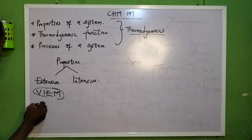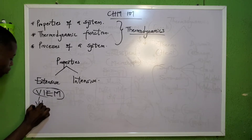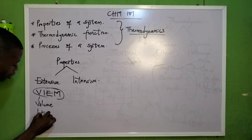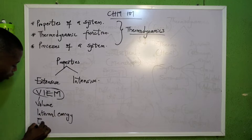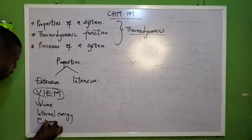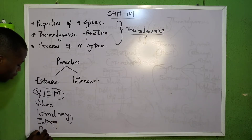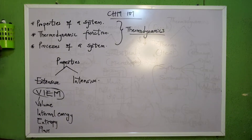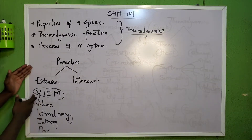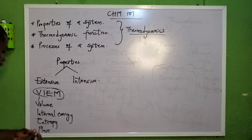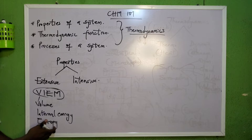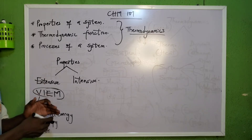Whenever you remember VIEM, know that these are the extensive properties. V stands for volume, I stands for internal energy, E stands for entropy, and M stands for mass. Volume is dependent on the magnitude of the material under consideration, and internal energy, entropy, and mass are the same.